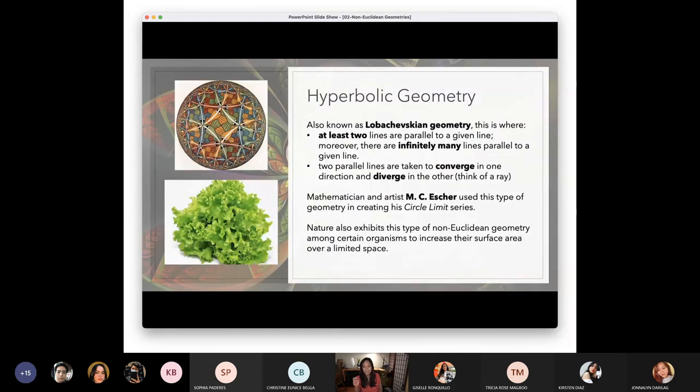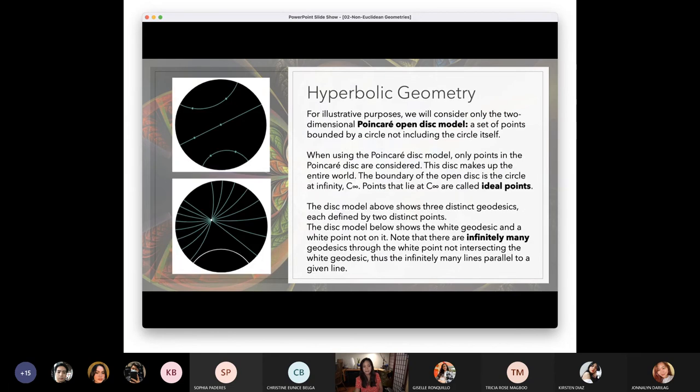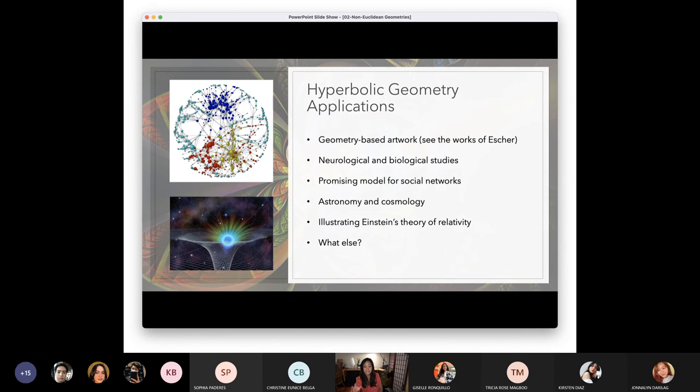Now for hyperbolic, hyperbolic is not just theoretical, it's seen in nature. Like for example, these vegetables, fractals, really beautiful microorganisms. They have these shapes that is not Euclidean and not spherical. So we call this the hyperbolic geometry. So the hyperbolic geometry, you'll notice that it's used for art of course. And if you see this, this is neurological and biological studies. We have promising models for social works, astronomy and cosmology, a black hole, and then Einstein's theory of relativity. So we have this application of these types of geometry.